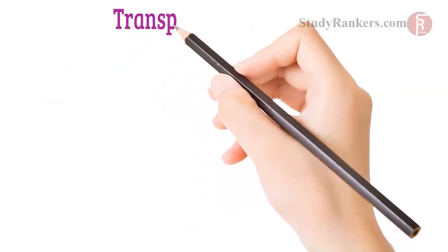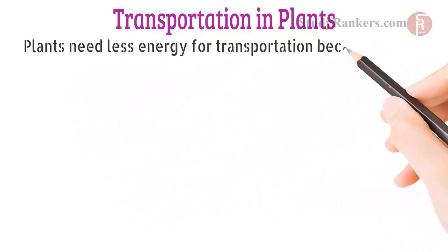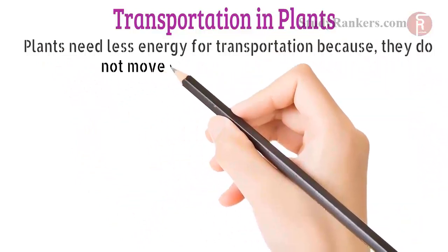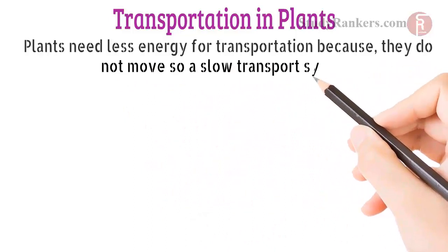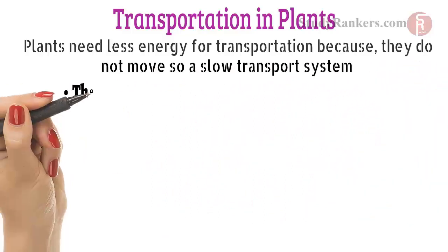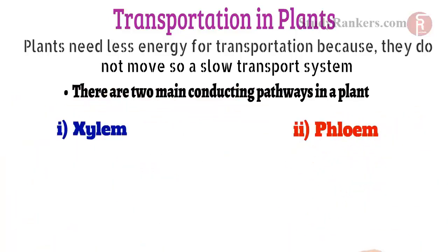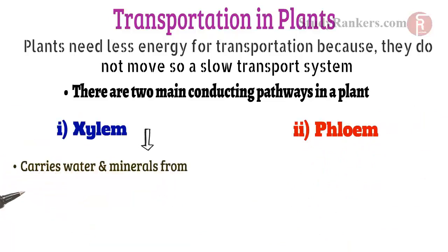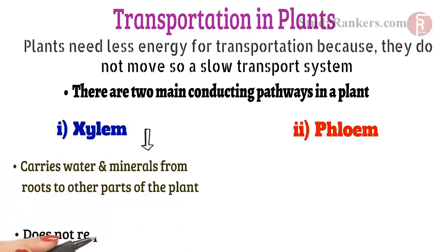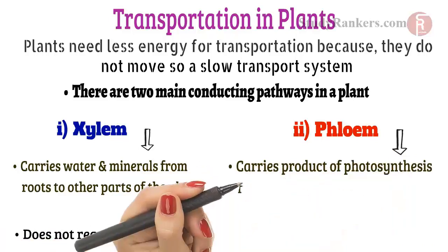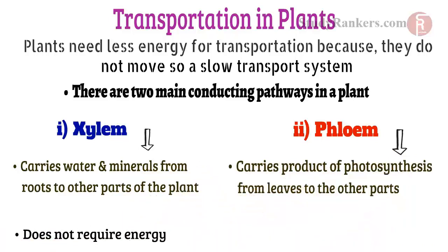Our next topic in this part is transportation in plants. Plants need less energy for transportation because they do not move, so a slow transport system suffices. There are two main conducting pathways in a plant: xylem and phloem. Xylem carries water and minerals from the root to other parts of the plant and does not require energy. Phloem carries products of photosynthesis from leaves to other parts of the plant.